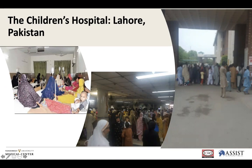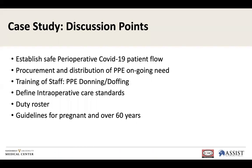Thank you, Mark. I work at a very high-volume tertiary pediatric center. Our outpatient unit sees about 1,100 patients a day. There are at least three to five patients on every inpatient bed — that's a real picture. It's a 1,100-bed hospital. The key topics I'll cover are: how to establish perioperative COVID patient flow, how to procure and distribute PPE, training staff on donning and doffing, defining intraoperative standards, and human resource management — including guidelines for pregnant staff, those with comorbidities, or those over 60.